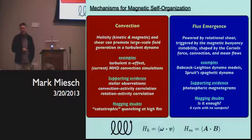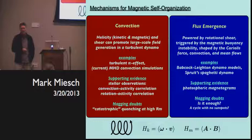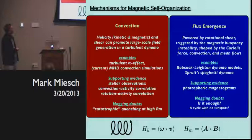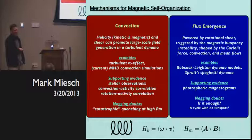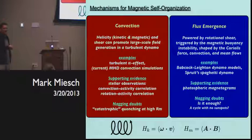So where does this self-organization come from? You have a chaotic magnetic field in a highly turbulent convection zone — how do you make organized field like sunspots, dipole moments, and magnetic cycles? There are basically two camps, and both of them have been around for more than half a century, and both are still very much alive today.